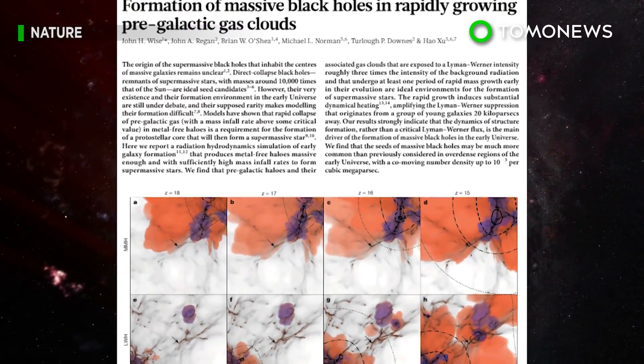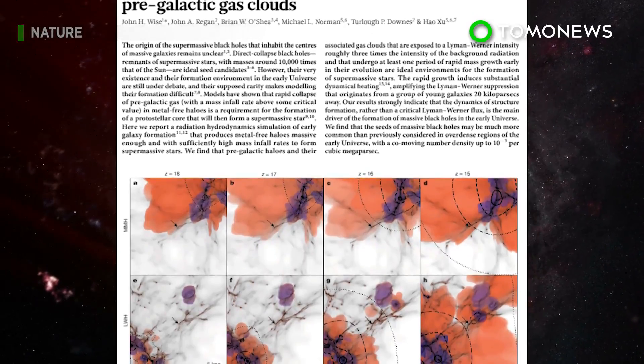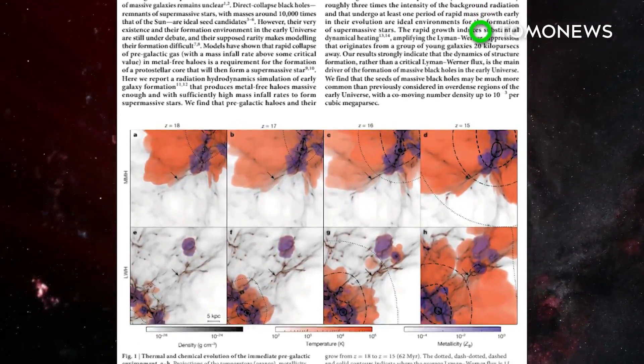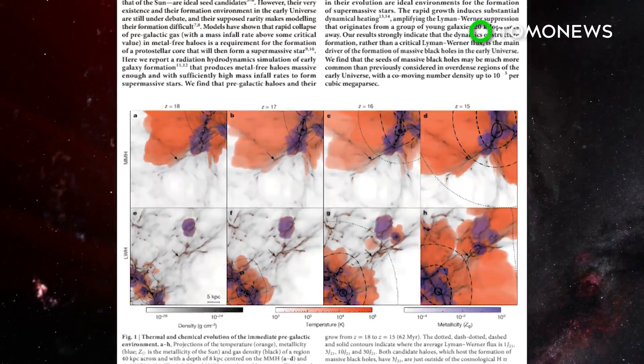According to the paper published in the journal Nature, the team used a 70-terabyte dataset called Renaissance Simulation. This program allows scientists to view a simulation of the early universe's evolution.